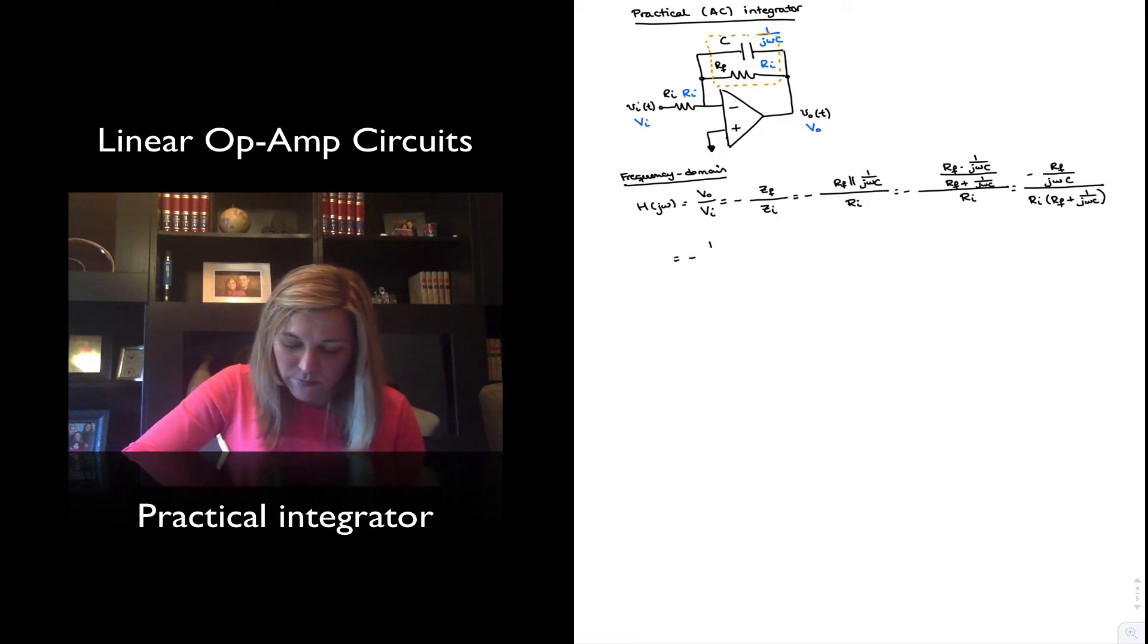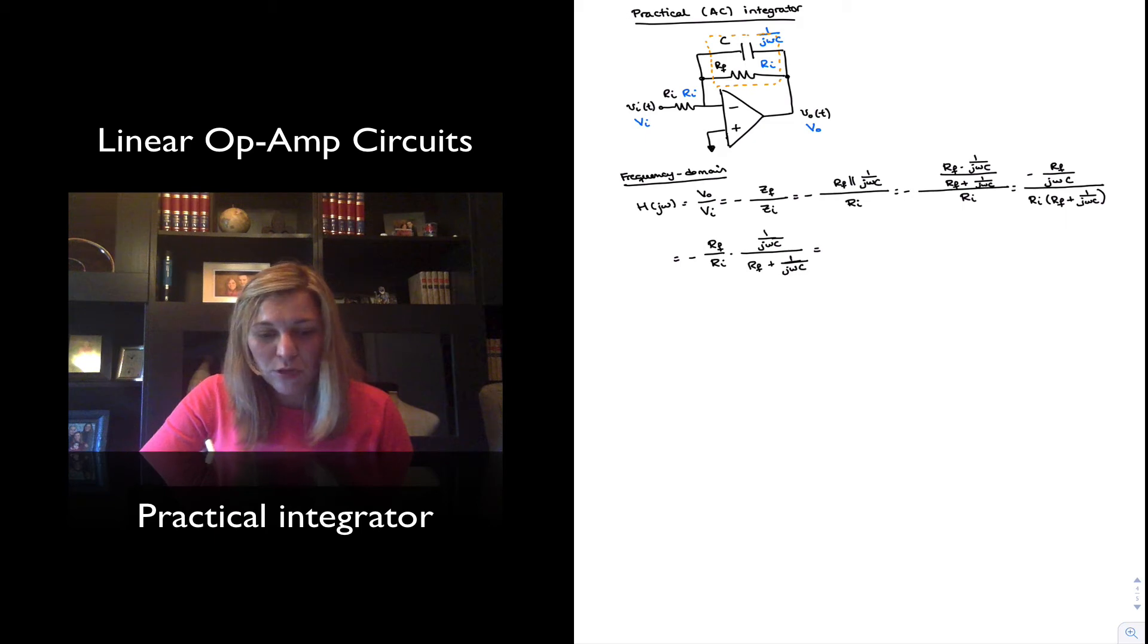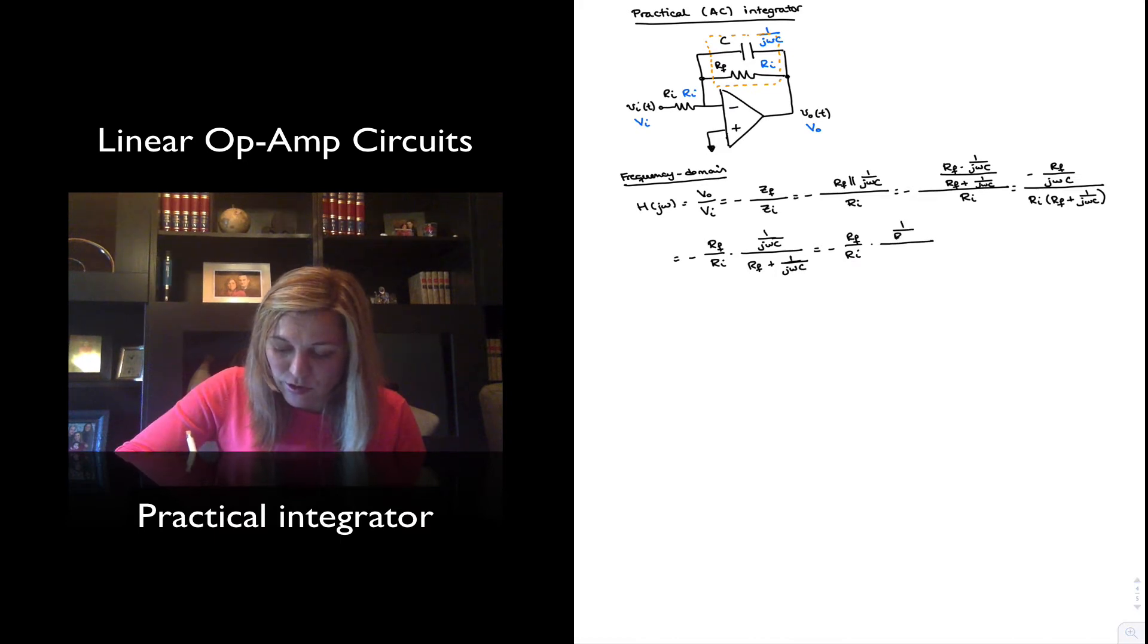So I can take RF and Ri, factor them out, and so it will be negative RF over Ri times 1 over j omega C divided by RF plus 1 over j omega C. And I can multiply numerator and denominator by j omega C, and then divide numerator and denominator by RF, and I will be left with negative RF over Ri times 1 over RF times C divided by j omega plus 1 over RF times C. And this is the standard form for a first order low pass filter.